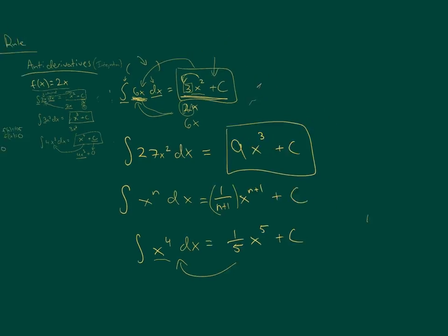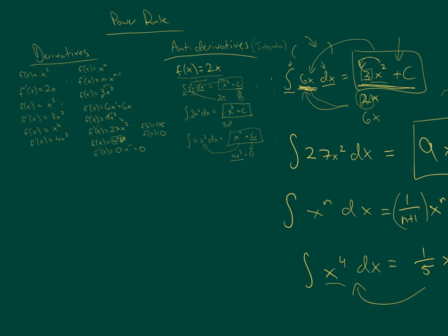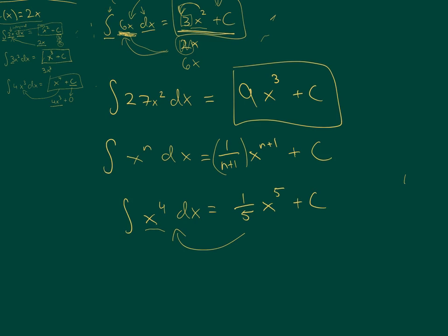All these examples we've been working with — in derivatives and antiderivatives — they've actually been the same. With 2x here, we took the derivative of x squared and got 2x. Here we took the antiderivative of 2x and got x squared plus c. Here we took the derivative of x cubed, got 3x squared. And the antiderivative of 3x squared takes you back to x cubed. So you can see the relationship: differentiation and antidifferentiation allow you to move back and forth between the two. If I take the derivative of this antiderivative, it takes me back to the integrand.